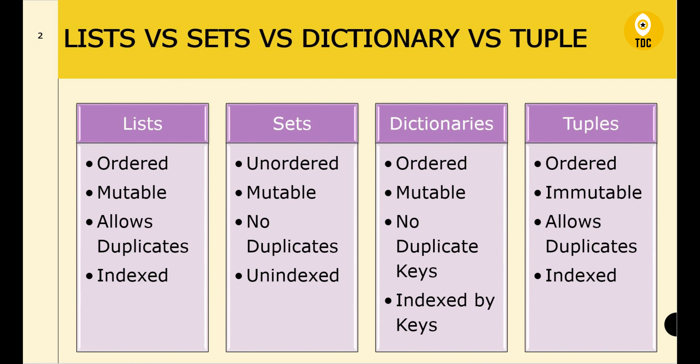First, the differences. A list is ordered, mutable, allows duplicates, and is indexed. Ordered means that when values are stored — for example, one, two, three, four, five in square brackets — each position has a defined index: first element, second element, third, and so on. Mutable means you can change a value; for example, change the value at index one from two to twenty. It allows duplicates, so you can insert the same value like four or five again. And it is indexed, meaning you can access elements by their index for faster retrieval.